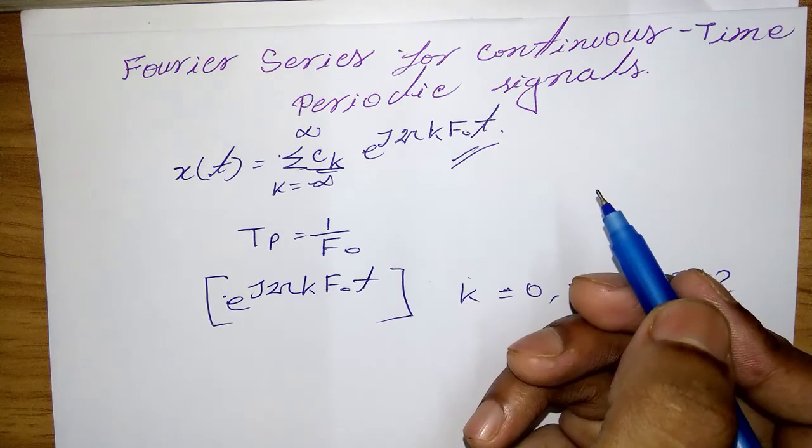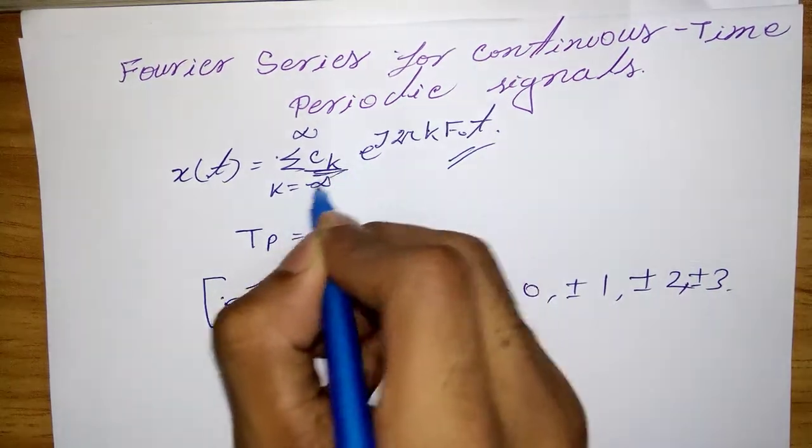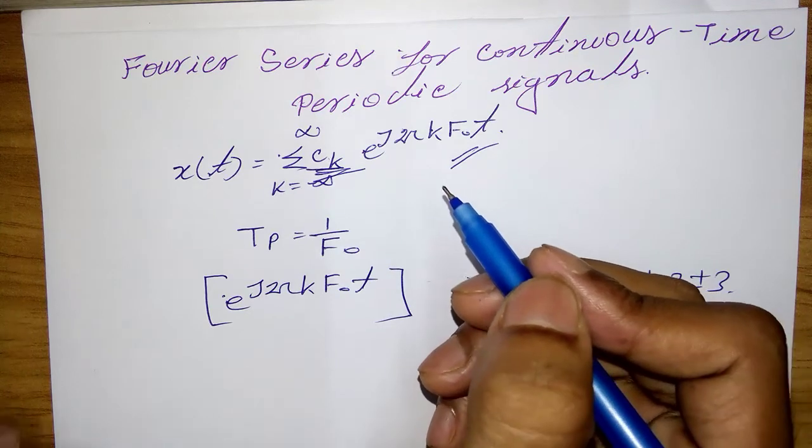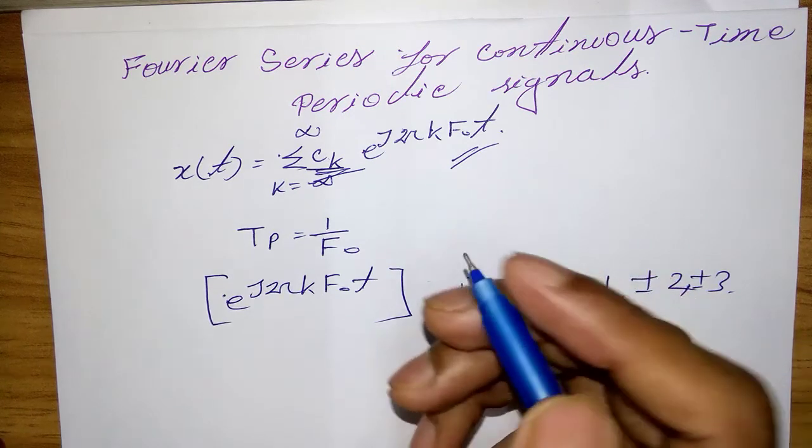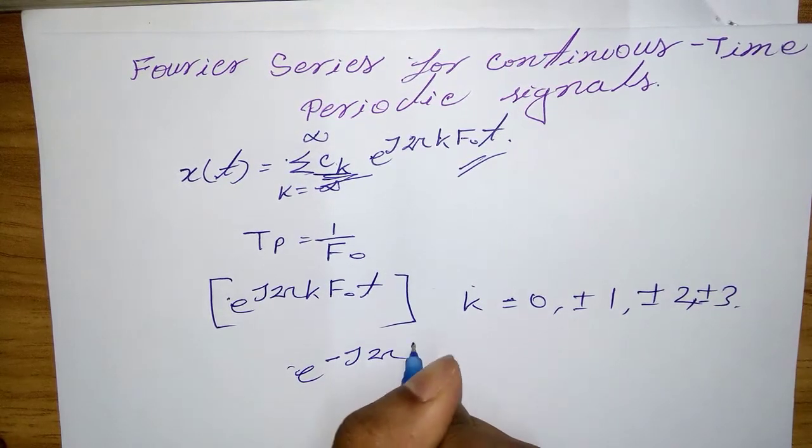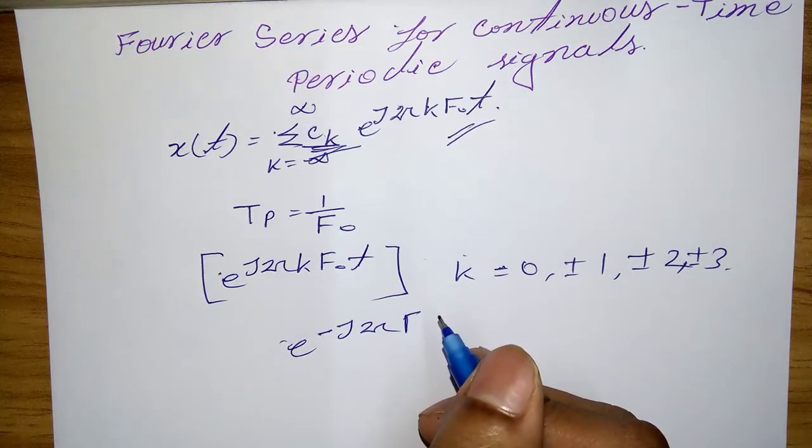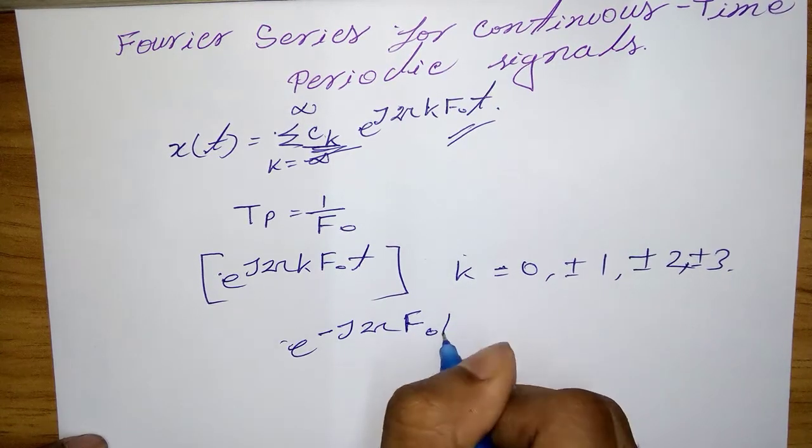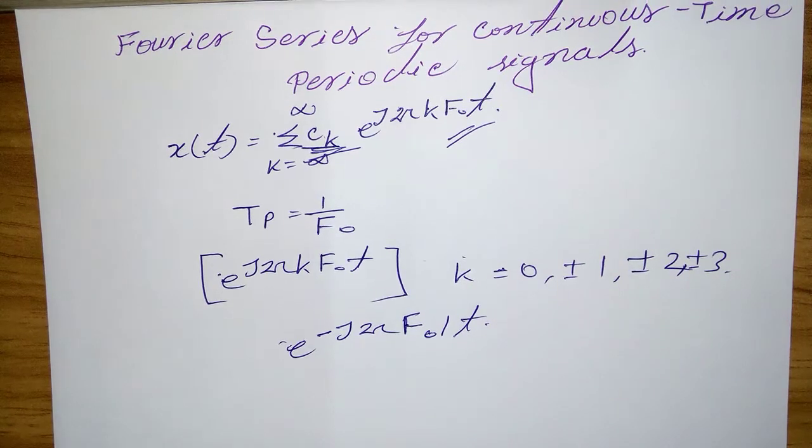To determine the expression for the coefficients c_k, we must multiply both sides with a complex exponential e^(-j2πf₀lt), where l is an integer.